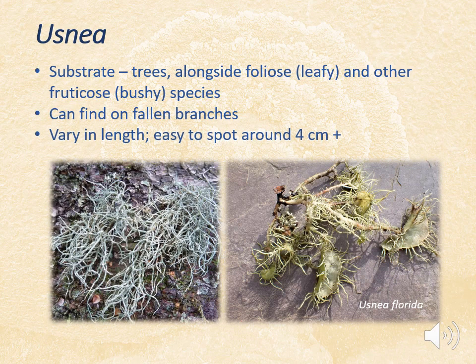Usnea is a fruticose species with a single holdfast and fine branches radiating out from that single attachment point. The branches are very fine and quite spindly, giving a wiry or hairy appearance. It's quite difficult to tell the species apart from each other, so at this point it's easier to refer to them just as Usnea. One example is easy to recognise because it has huge disc-like apothecia at the tips of the branches with lots of little eyelash-like bits of thallus on the edges, giving it the appearance of a Venus flytrap — you'll find that on fallen branches around the Betws-y-Coed area.